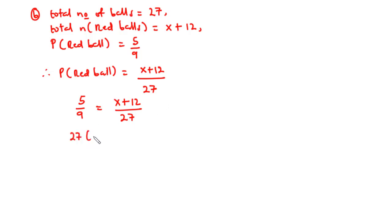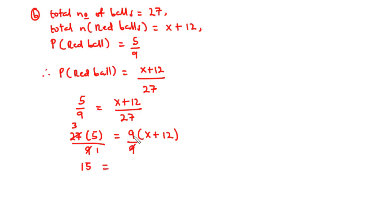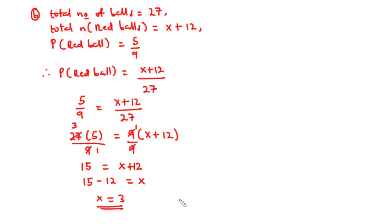Dividing through by 9: 9 goes into 27 three times, so 3 times 5 is 15, and we are left with 15 equals X plus 12. Transposing 12 to the left-hand side: 15 minus 12 equals X, giving us X equals 3. So the value of X is 3. That's it for today's video — thanks for watching and see you in the next one!